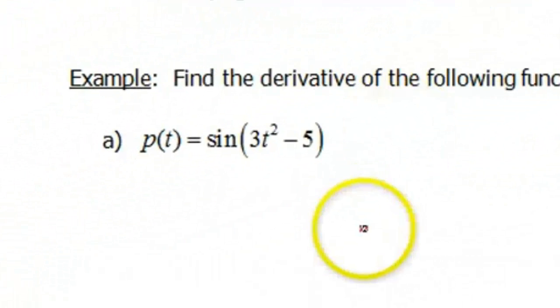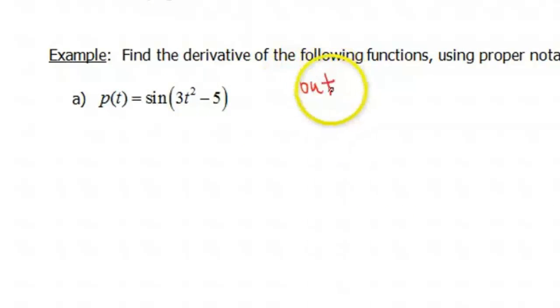For this example, our function is p(t) = sin(3t² - 5). You have to ask yourself the question, which function is being composed into the other function?